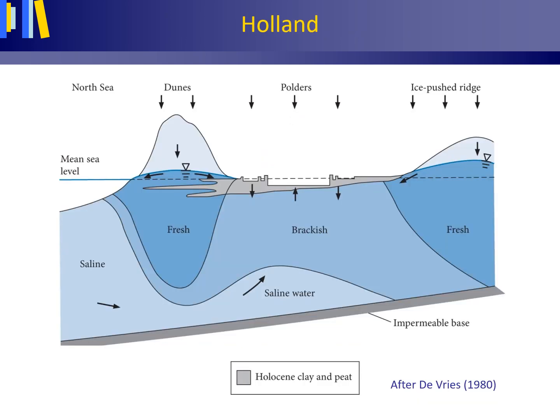This figure is a geohydrological profile through the western part of the Netherlands, showing the distribution of fresh, brackish, and saline water. Fresh groundwater can be seen below the coastal dunes and also under a Pleistocene ice-pushed ridge some 50 km to the east.